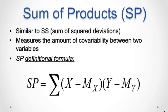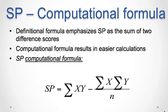To calculate the Pearson correlation, it is necessary to introduce one new concept: the sum of products of deviations, or SP for short. This new value is similar to sum of squares, or the sum of square deviations, which is used to measure variability for a single variable. We can use sum of products to measure the amount of co-variability between two variables. The value for SP can be calculated with either a definitional formula or a computational formula. The definitional formula emphasizes sum of products as the sum of two different scores. The computational formula is easier to calculate, and you may notice the formulas for sum of products are similar to the formulas for sum of squares.